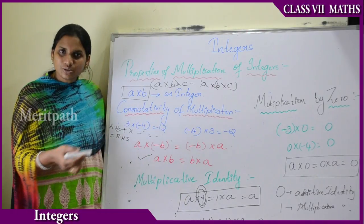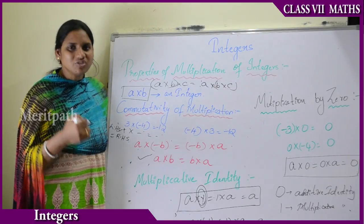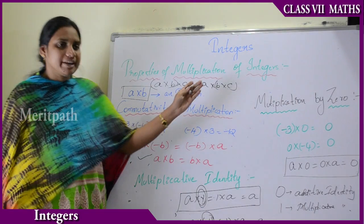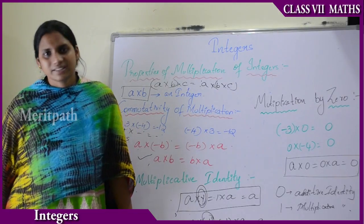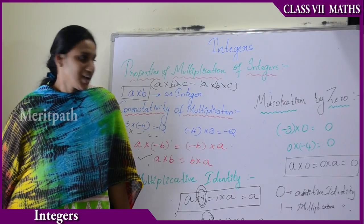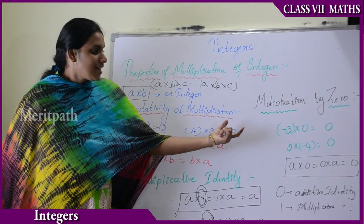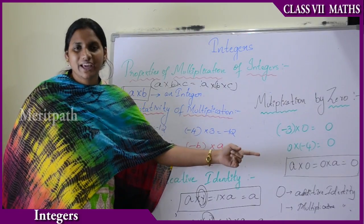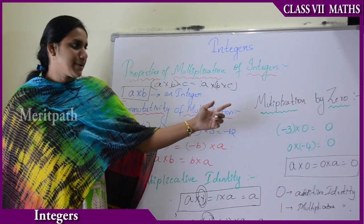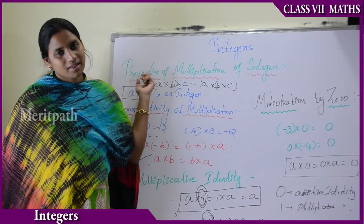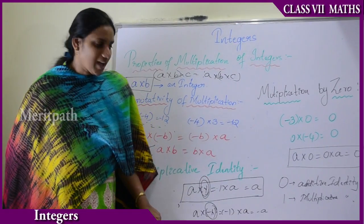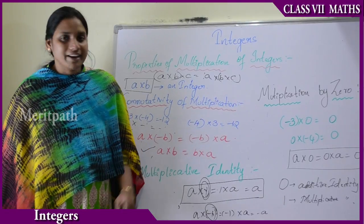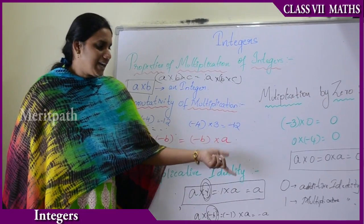Also, A into minus 1 equals minus A, and minus 1 into A equals minus A — here minus 1 is acting as a multiplicative identity for negation. Similarly, multiplication by 0: 3 into 0 is 0, 4 into 0 is 0, 1000 into 0 is 0. Any number multiplied by 0 gives 0 — that is, A into 0 equals 0 into A equals 0. This is the multiplication property of 0. Therefore, 0 is the additive identity and 1 is the multiplicative identity — they are the universal identities for addition and multiplication respectively.